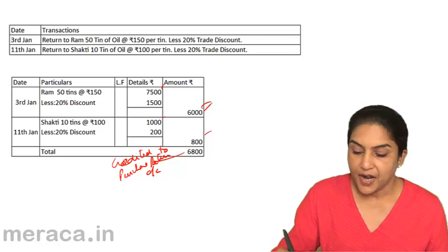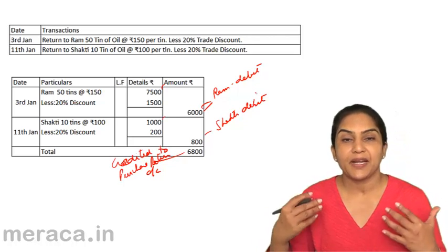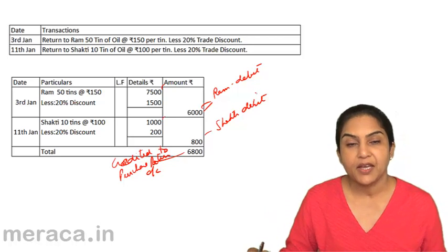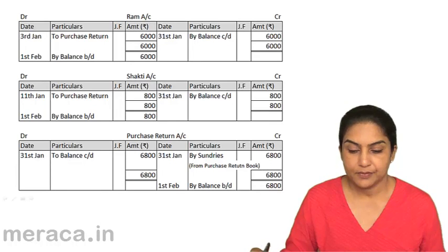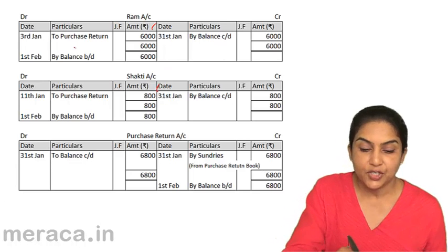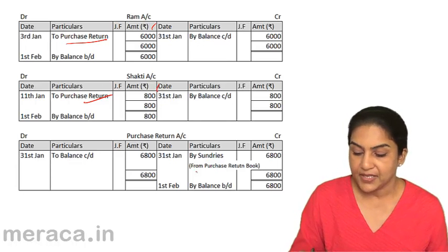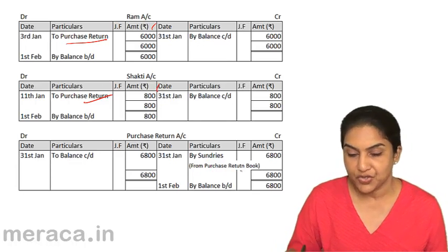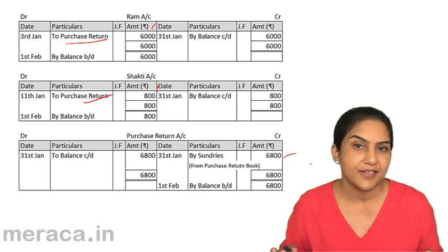Individually, Ram's account is debited and Shakti's account is debited — these are the suppliers' accounts being debited because the purchase is being returned. The purchase return account is credited by sundries as per the purchase return journal, totalling 6,800. This is how the double entry is complete.